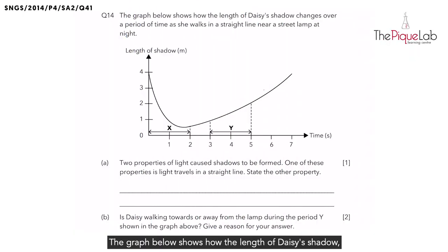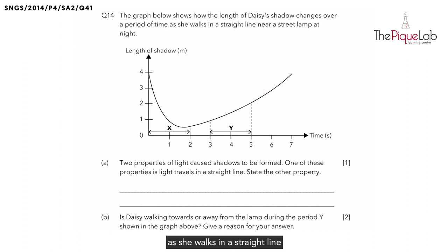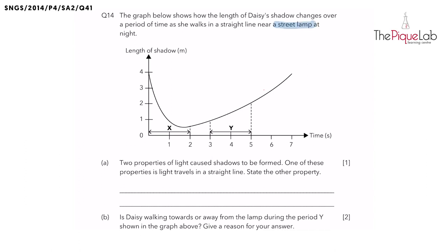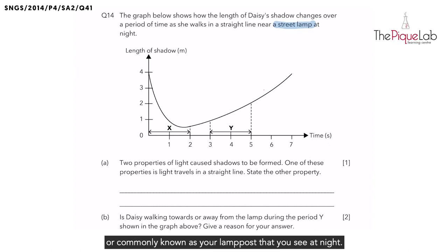The graph below shows how the length of Daisy's shadow changes over a period of time as she walks in a straight line near a street lamp at night. We're looking at how the length of the shadow changes when we are walking either towards or away from a street lamp, commonly known as the lamp post that you see at night.